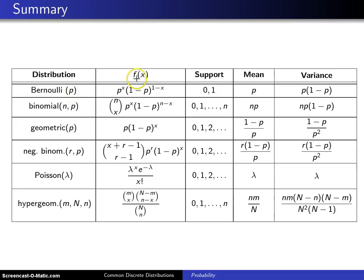Going across here the column headings are f of x, which is the probability mass function, the support values, which for the Bernoulli are just 0 and 1, where 1 is generically referred to as success and 0 as failure, the population mean of the distribution, which for the Bernoulli is just p, and the population variance of the distribution, which for the Bernoulli is p times 1 minus p.